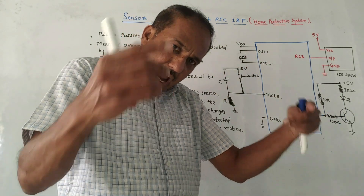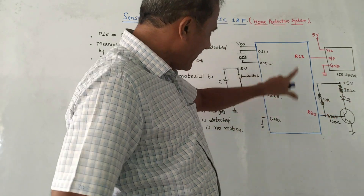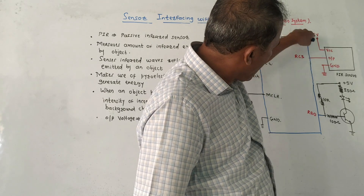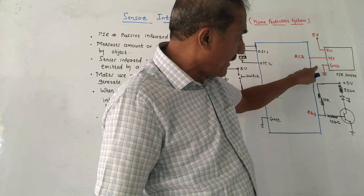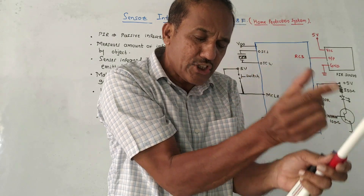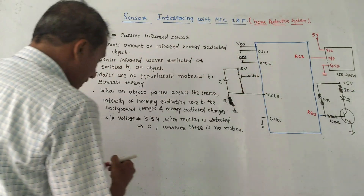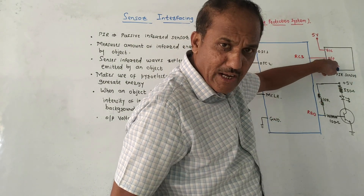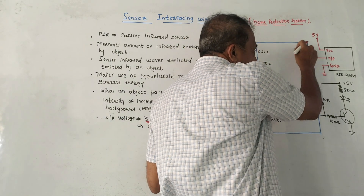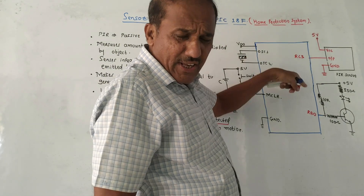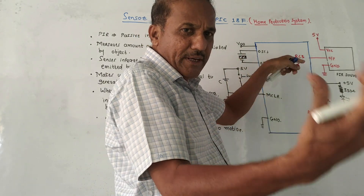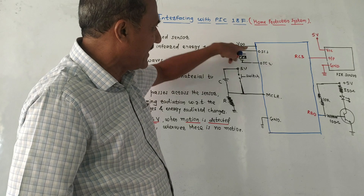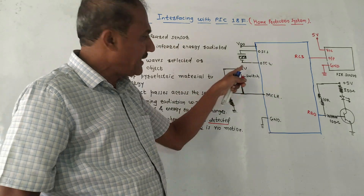The detection indication will be given by the LED. For the connections: this block indicates the PIR sensor. First pin is VCC supply, second is the output terminal — the output voltage. Whenever motion is detected, the output voltage of 3.3 volts will be available at RC3, that is pin 3 of port C. We can change to any port or any pin number.